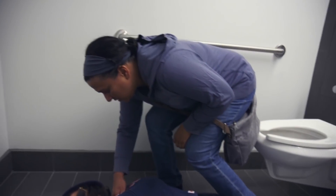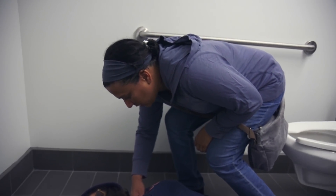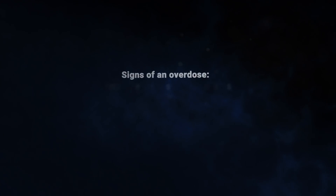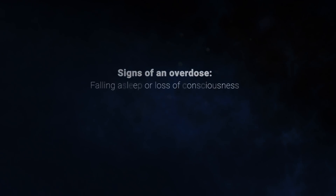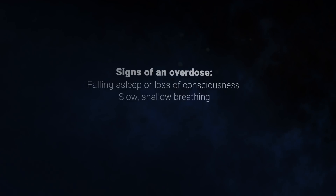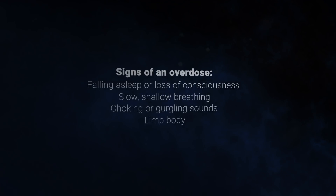The first step in helping someone who has overdosed is to recognize what is going on and respond appropriately. Signs of an overdose include falling asleep or loss of consciousness, slow shallow breathing, choking or gurgling sounds, a limp body, pale, blue, or cold skin.